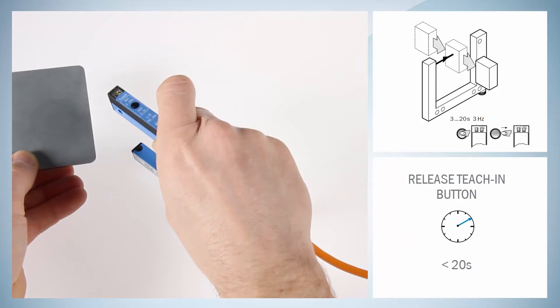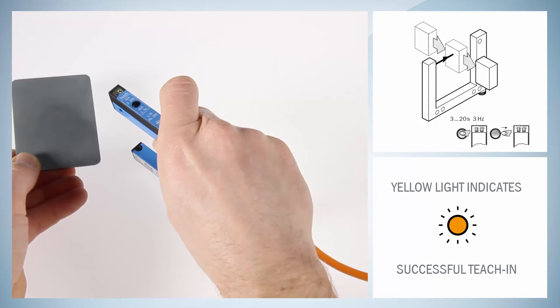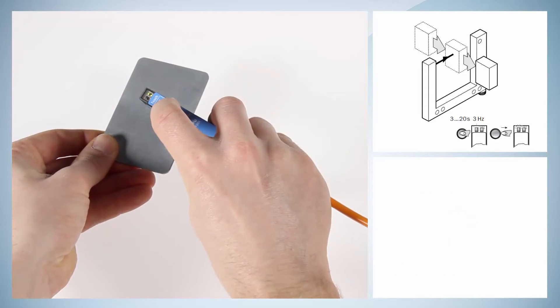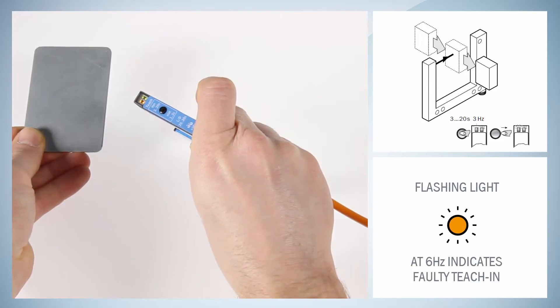To end the Teach-In, release the Teach-In button after less than 20 seconds. If the Teach-In is successful, the function indicator directly indicates the output state of the sensor. A faulty Teach-In is indicated by a fast flashing yellow LED at 6 hertz until a new Teach-In has been successfully carried out.